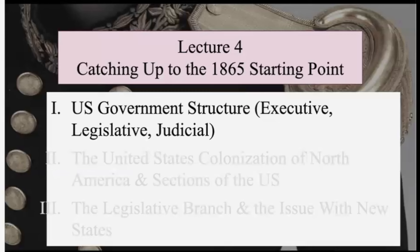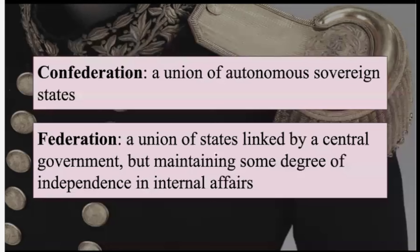This is going to be a really superficial overview, so go to YAW, your textbook, if you want more detail. The Library of Congress and the National Archives also have useful websites. In the aftermath of the Revolution, the former 13 British colonies became states joined in a confederation. A confederation is a union of autonomous sovereign states. A federation is a union of states linked by a central government, but maintaining some degree of independence in internal affairs.